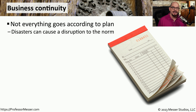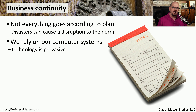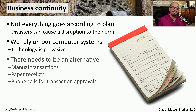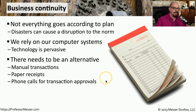On a normal business day, we have access to our laptops, mobile devices, networks, and any other technology owned by the company. We're so used to using our technology that we often don't think of a circumstance when that technology is no longer available — which is another good reason to have business continuity policies. For example, if the network used to process credit card transactions is not available, your business continuity plan would specify performing manual transactions and using phone calls to the credit card company to manually approve transactions.